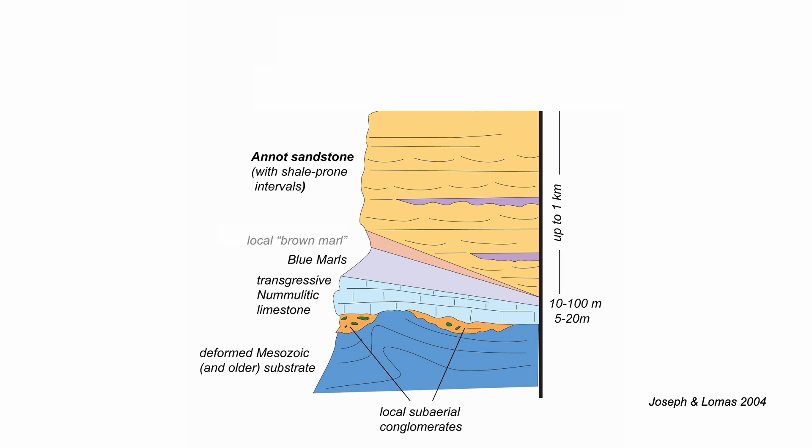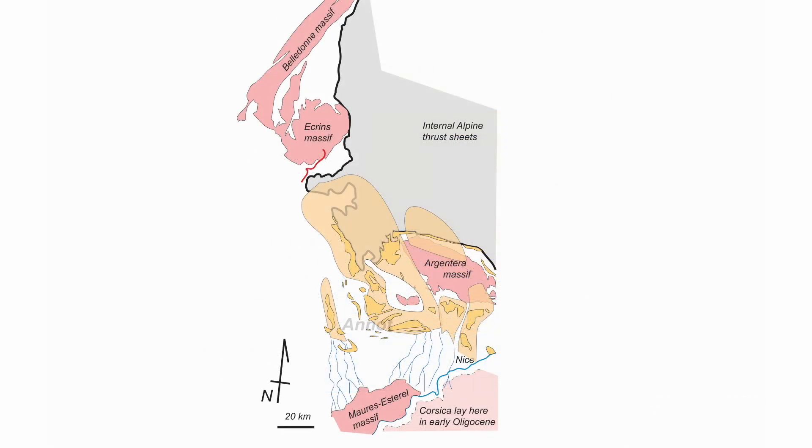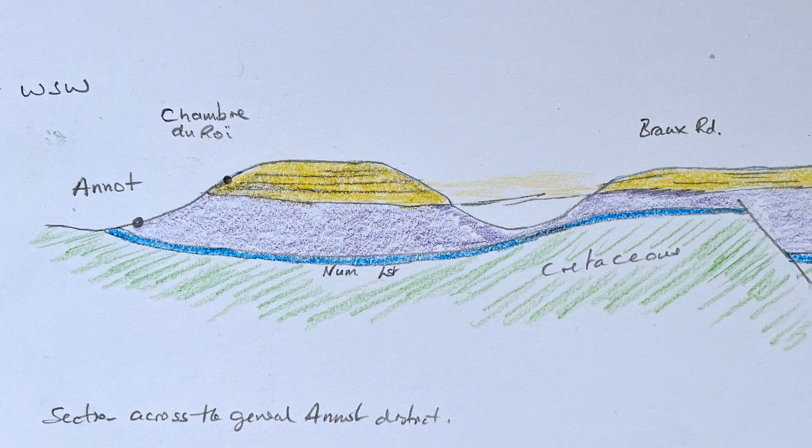Locally within this succession, there are brown siltstones and carbonate mudstones, called the brown marls. More about these later. So that's a general introduction to the strata. Let's go and visit them, starting in their type area around the town of Annot.